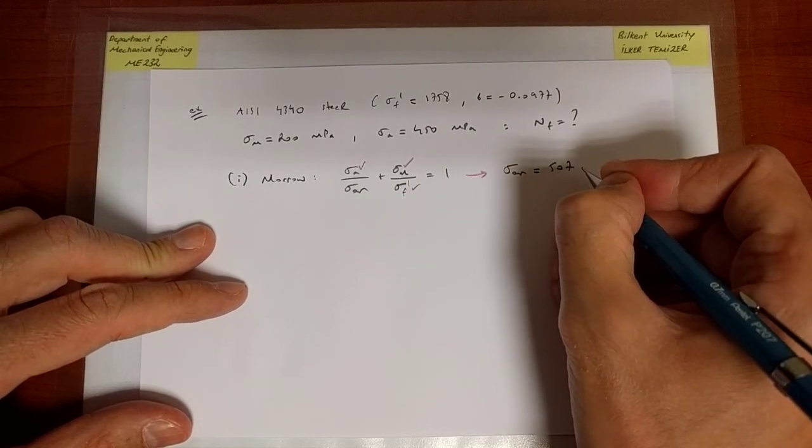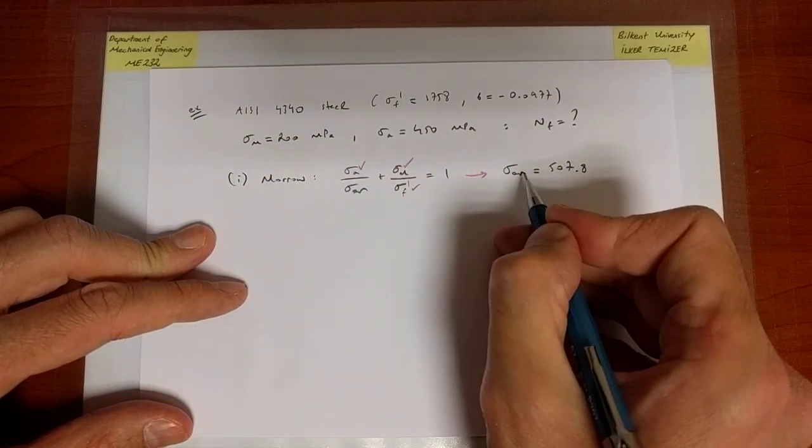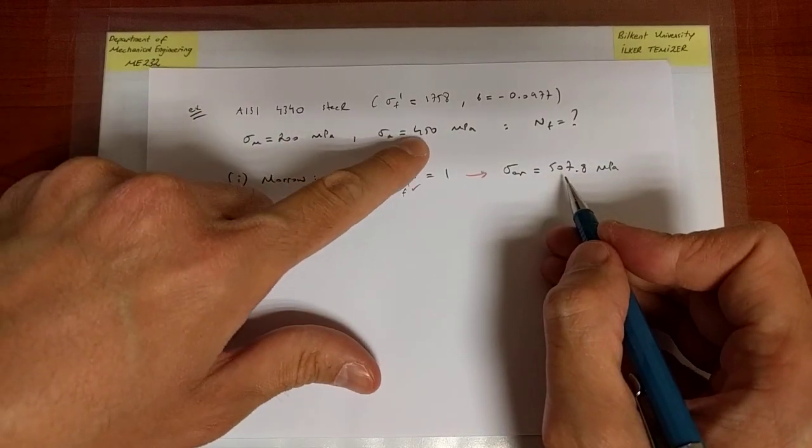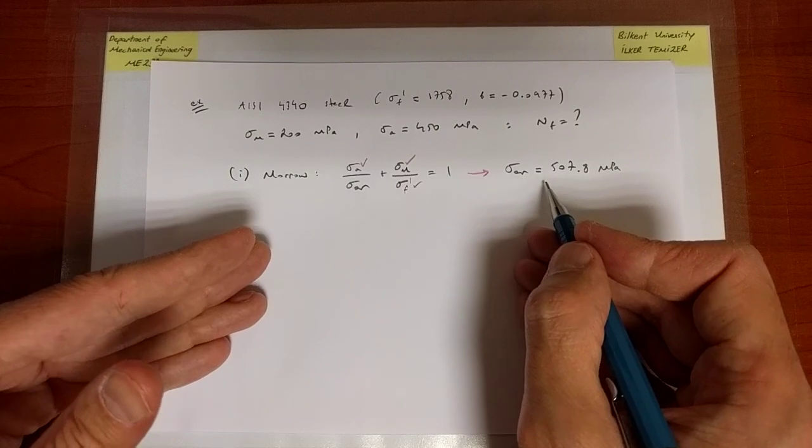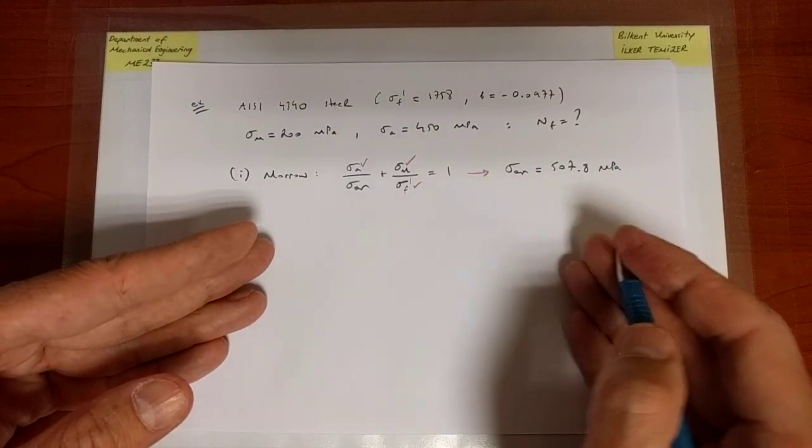Why equivalent? Because physically, the loading is not completely reverse. I'm just mapping it to a completely reverse value. And that value, as you will notice, is larger than sigma a, because the equivalent completely reverse has zero mean. So you can apply a larger stress amplitude to achieve the same cycle.